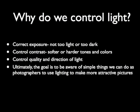Basic lighting for photographers. So why do we control light? We control light to correct exposure so our pictures are either not too light or not too dark. We control light to control contrast so that we can control either softer or harder tones and colors. We control the quality and direction of light, and ultimately the goal is to be aware of simple things we can do as photographers to use lighting to make more attractive pictures.